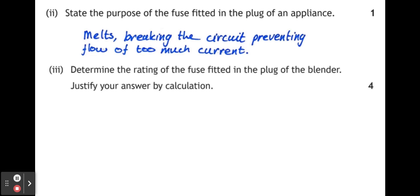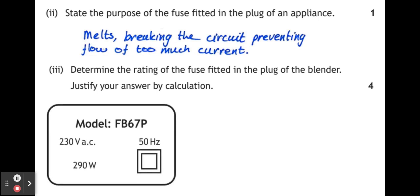Part three, determine the rating of the fuse fitted in the plug of the blender. Justify your answer by calculation. Here's our rating plate for the appliance. As a general rule, anything above 700 watts or so, we would put a 13 amp fuse in. Anything below that, we would put a 3 amp fuse. So I'm expecting to be using a 3 amp fuse.